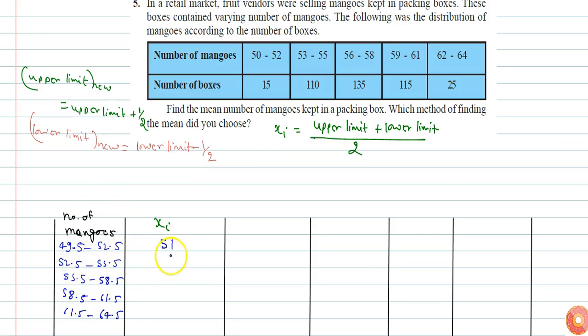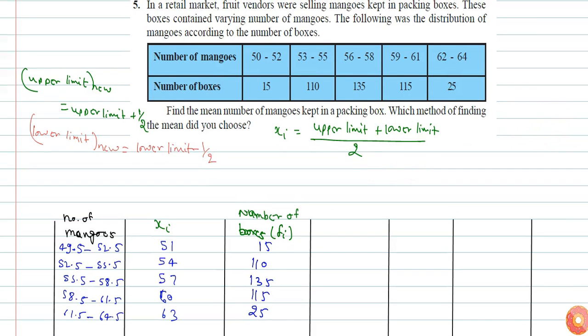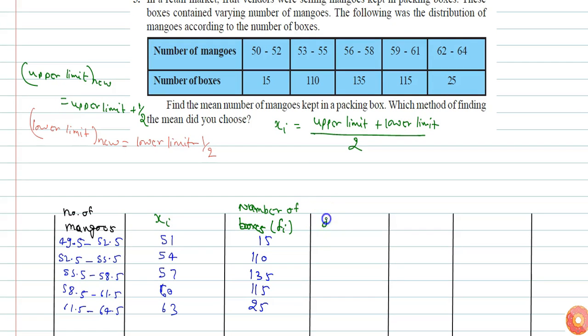Similarly 57, 60, 63. Now number of boxes can be considered the fi, the frequency. So corresponding frequency will be 15, 110, 135, 115, and 25. I am using the step deviation method to solve, to calculate the mean. So I need to calculate di.